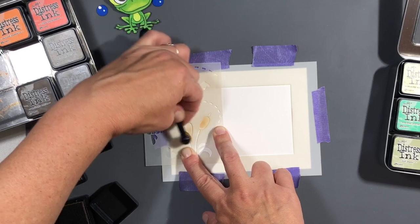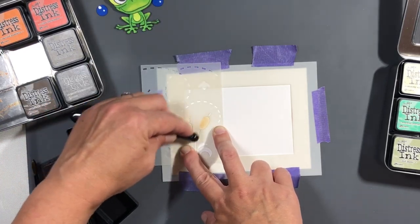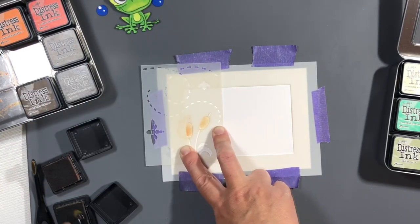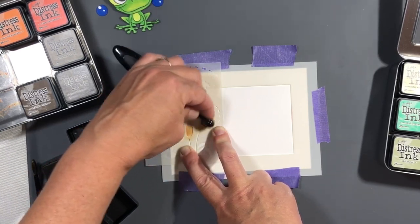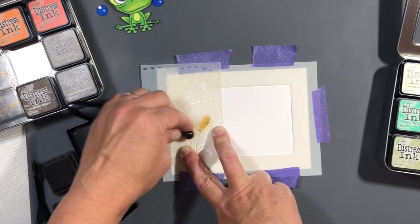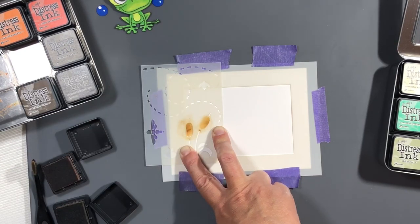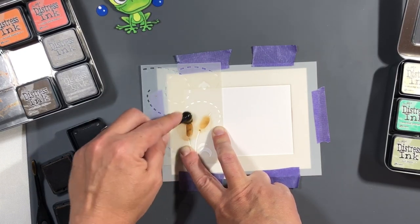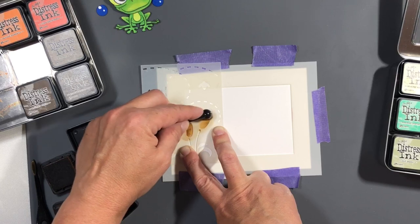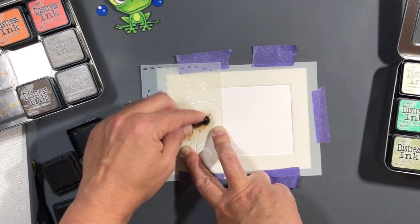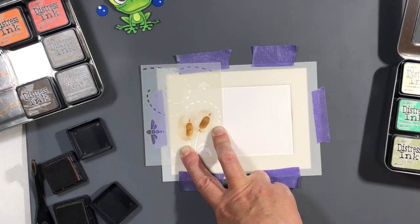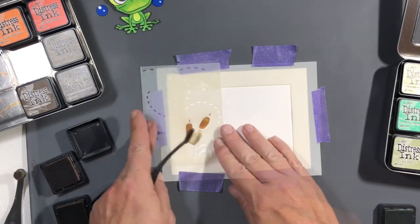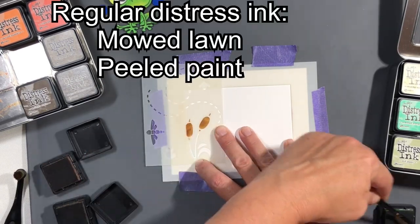I'll list above the colors I'm using for the cattail tops and then for the bottoms. I believe for the tops I use Tea Dye, Gathered Twigs, and Brushed Corduroy, but not in that order specifically, lightest to darkest. And then for the leaves and stem I use Mowed Lawn and Peeled Paint.